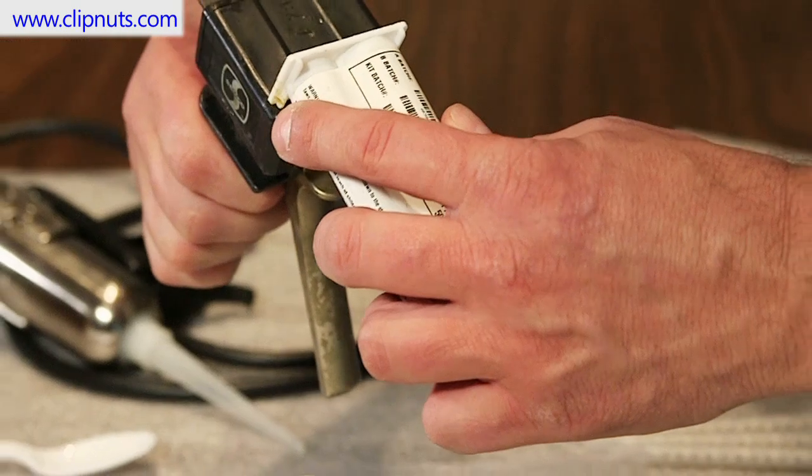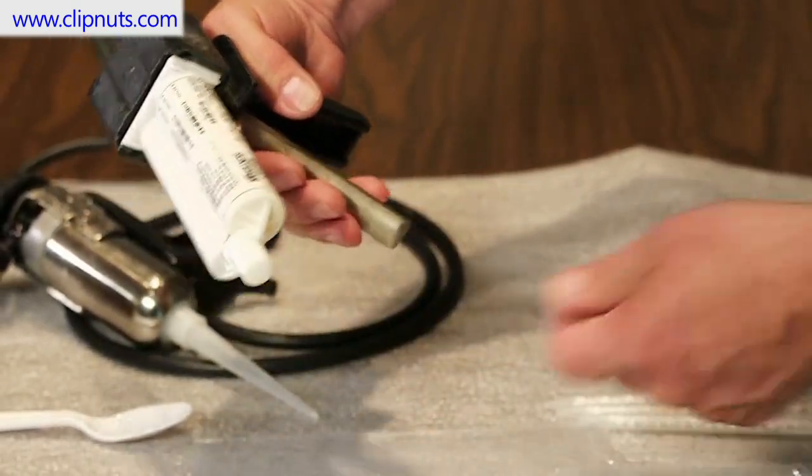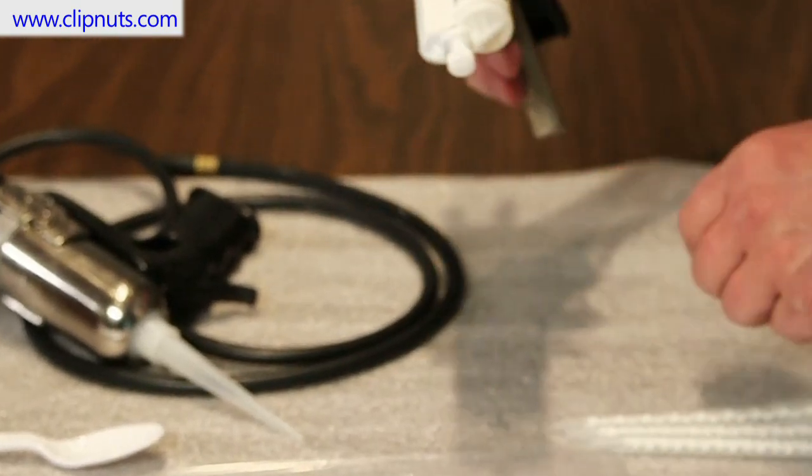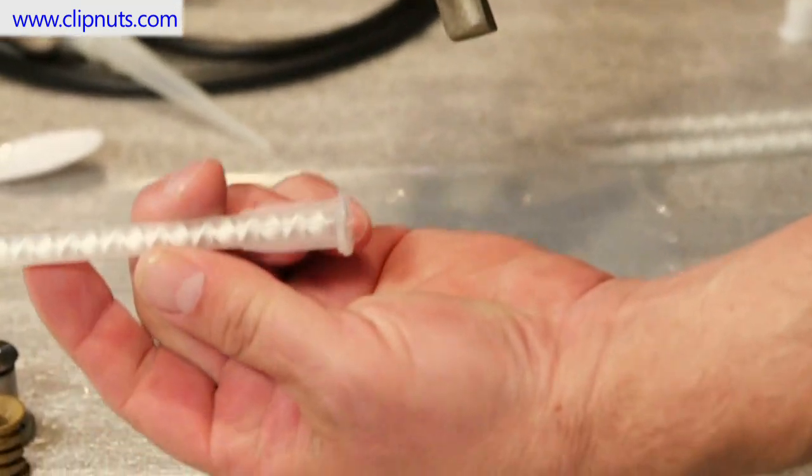In this example, we use a Semco extruding gun and Epibon's Epoxy Adhesive 420-A-B. Simply slide the end of the dual-adhesive cartridge onto the gun, take off the end cap, and insert the mixing nozzle.